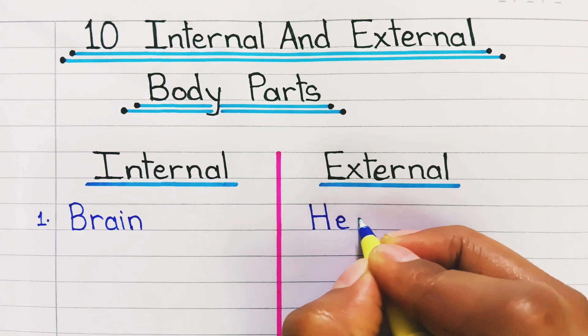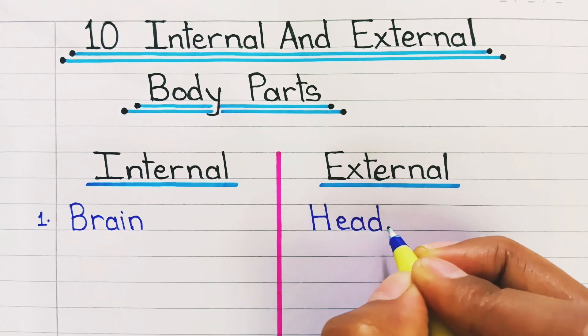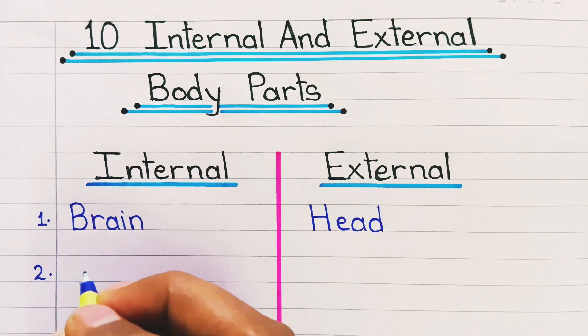1. Internal organ is brain. External organ is head.